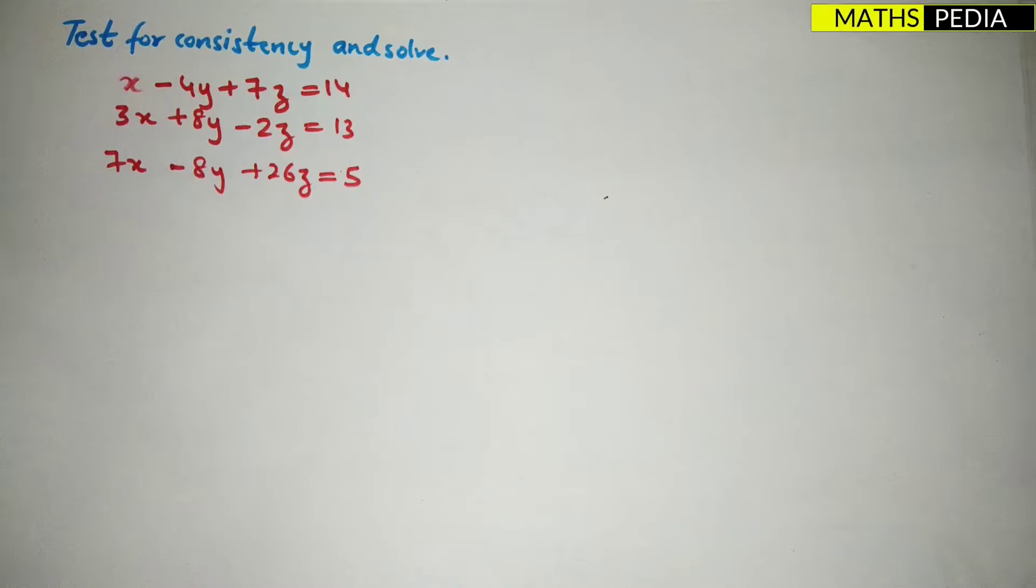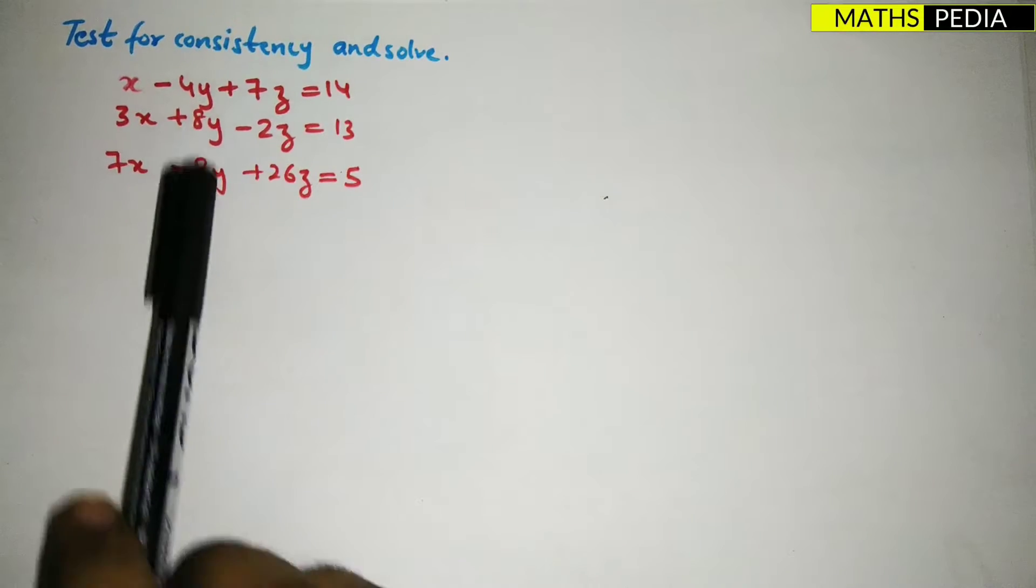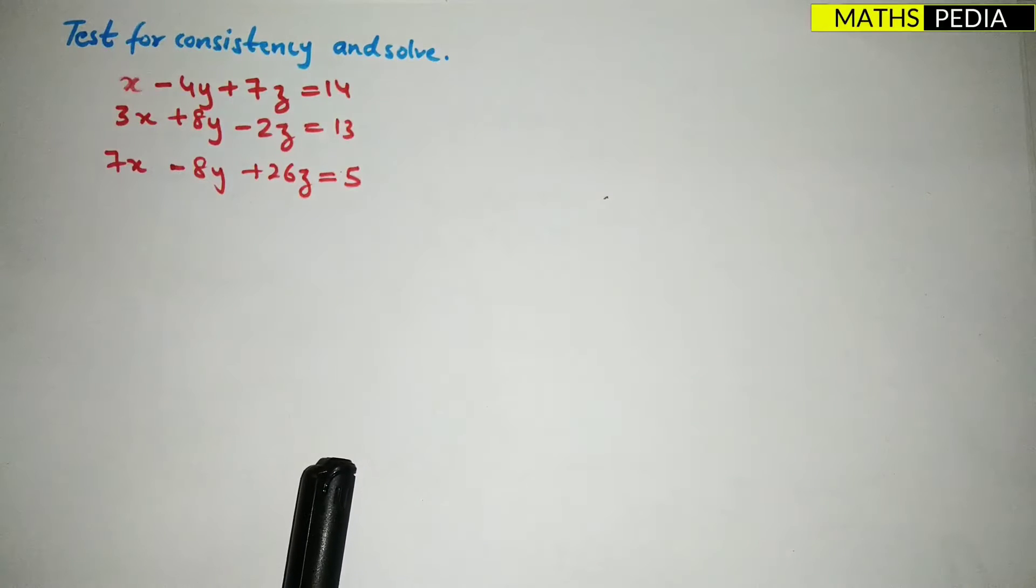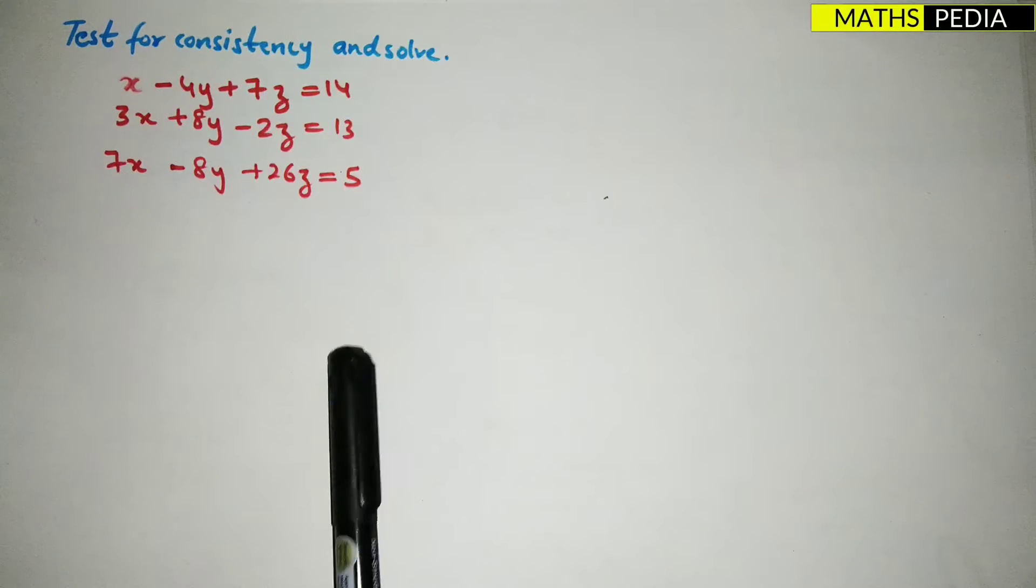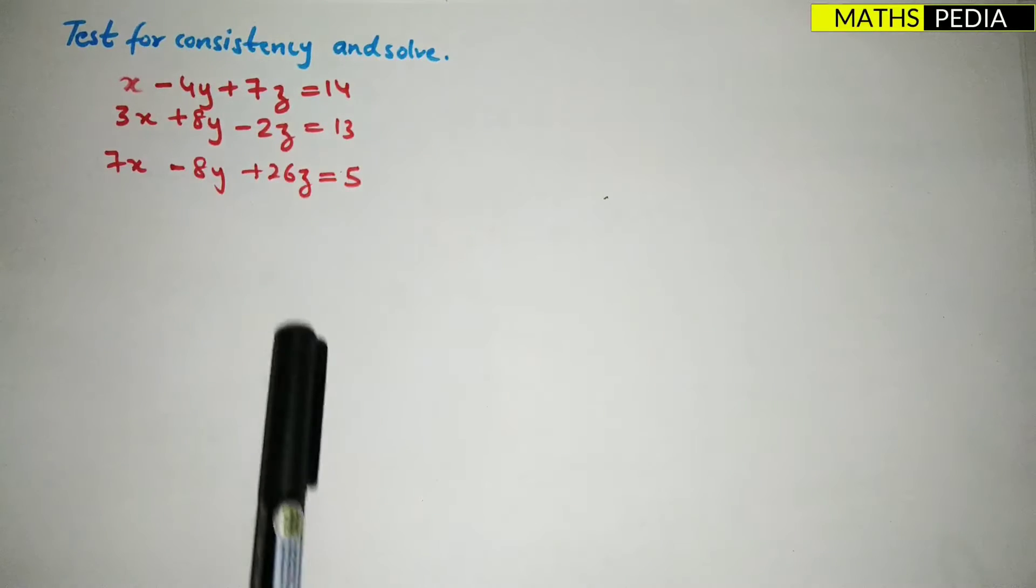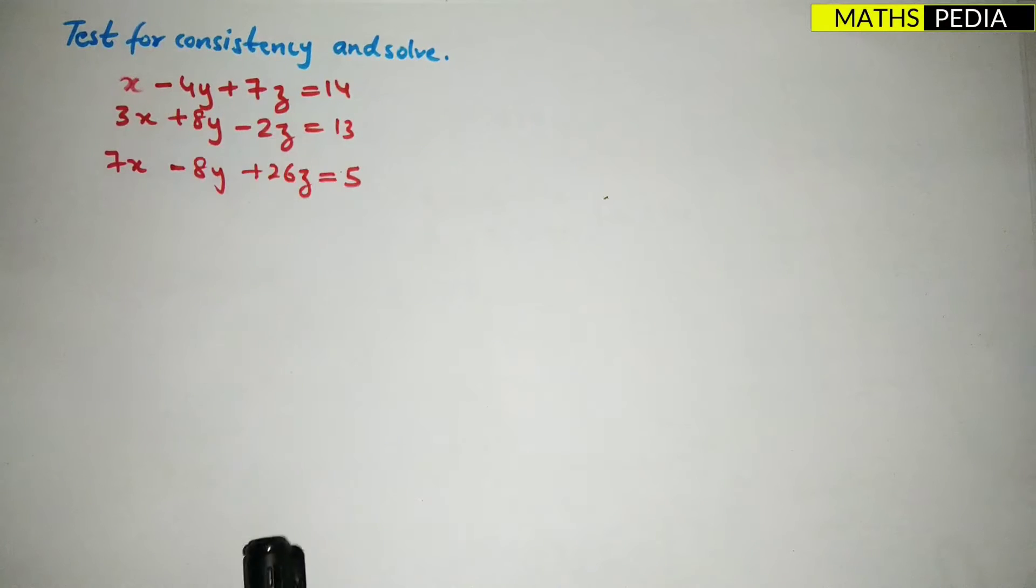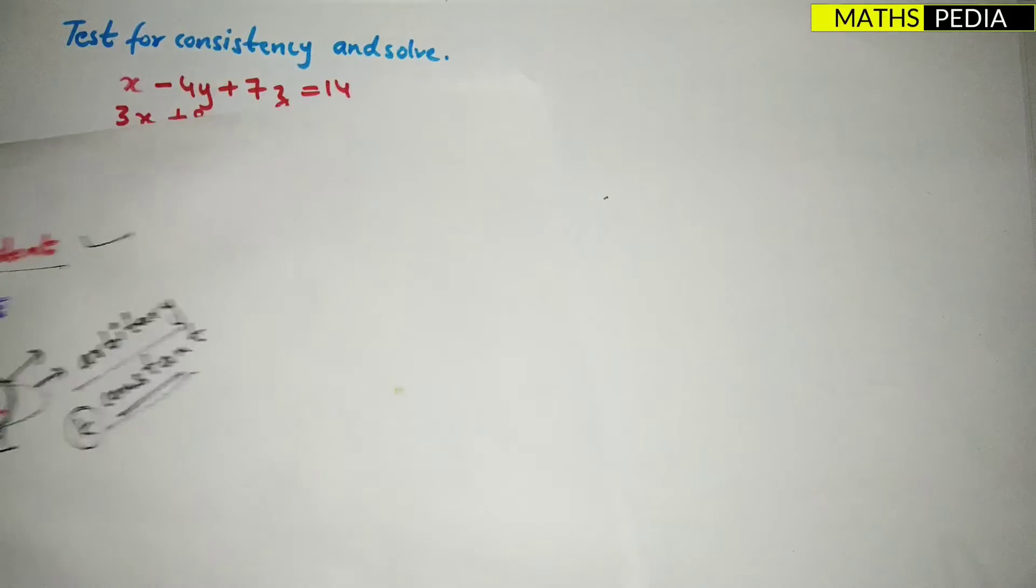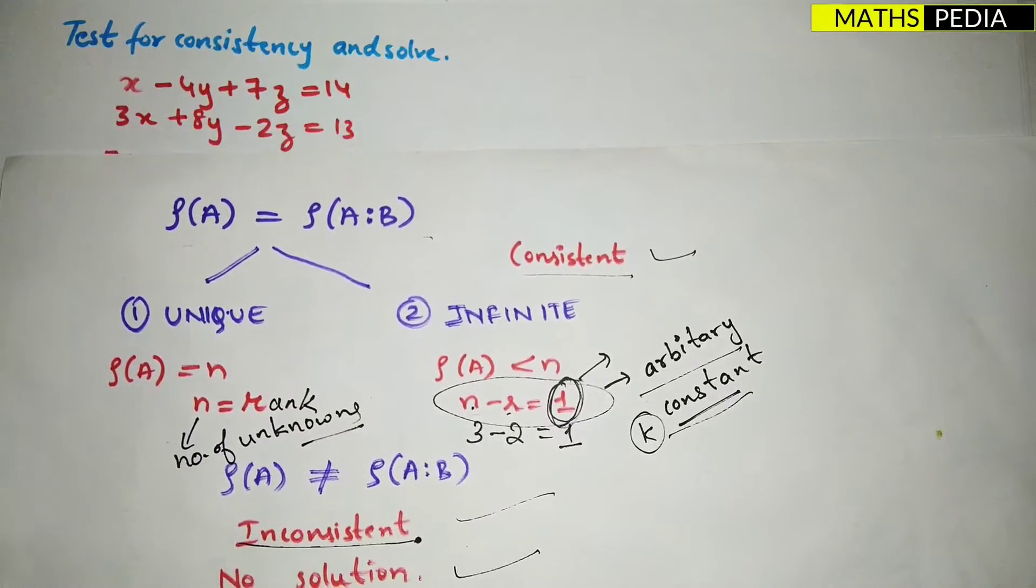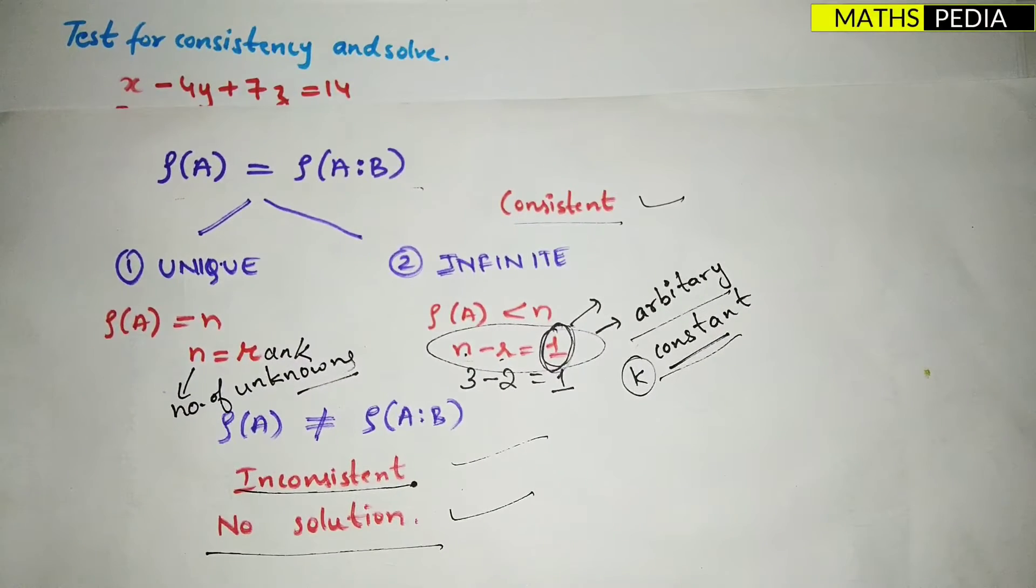In this video we're going to solve a problem based on consistency, whether it is inconsistent or consistent, and find out the unknowns, that means X, Y, Z values. As I mentioned, I have done two videos based on this, so I've solved a few problems. You can check it out.